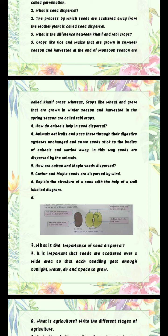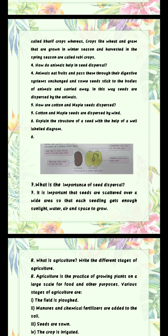Question 6: Explain the structure of a seed with the help of a well-labeled diagram. For this answer you have to draw a diagram which is given on page number 2 — draw it and properly label it. Question 7: What is the importance of seed dispersal? Answer: It is important that seeds are scattered over a wide area so that each seedling gets enough sunlight, water, air, and space to grow.